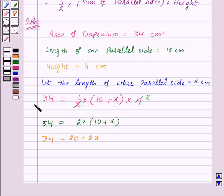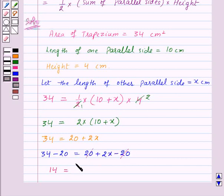Now subtracting 20 from both sides, we will get 34 minus 20 equals 20 plus 2x minus 20. So 34 minus 20 is 14, and on the right hand side 20 and minus 20 cancel, leaving us with 2x.